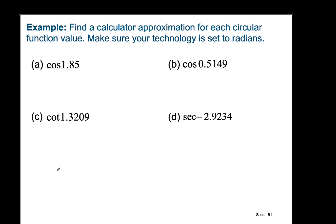In this example, we're asked to find a calculator approximation for each circular function. Right away we should be thinking: radians. So we need to make sure our technology is set to radians. Furthermore, you should notice that there is no degree symbol, which means we need to treat 1.85 as radians.